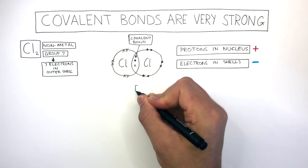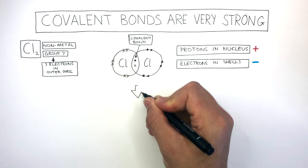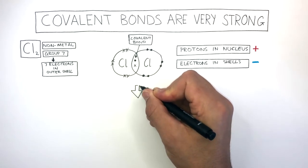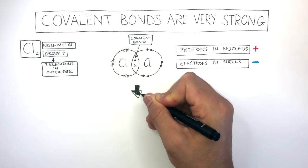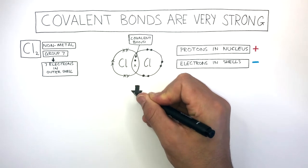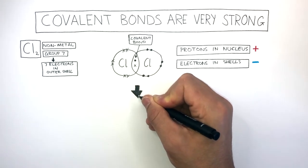Now let's think about why covalent bonds are so strong. Because covalent substances like water, carbon dioxide, or oxygen, they have really low melting points and boiling points. Yet we know covalent bonds are very strong. So why is this?